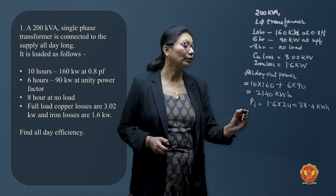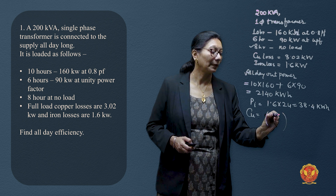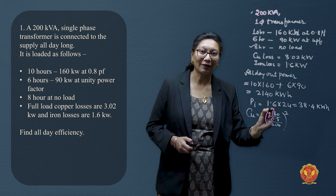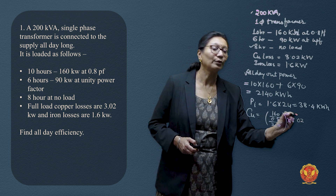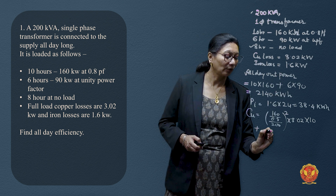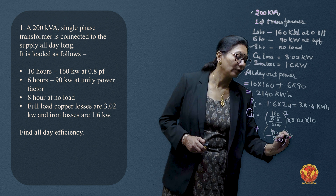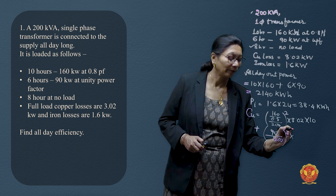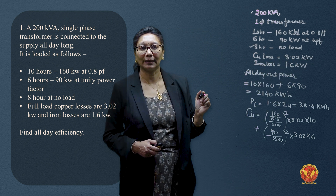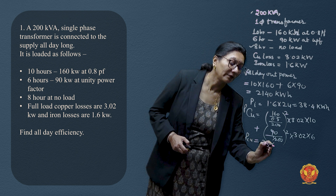Copper losses for 24 hours vary with load. For the first period: (160 / 0.8 / 200)² × 3.02 × 10 hours. For the second period: (90 / 1 / 200)² × 3.02 × 6 hours. For the third period (no load), copper losses are zero since there is no load on the secondary. This gives total copper losses of 33.67 kWh.